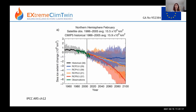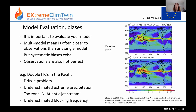A plot of Northern Hemisphere sea ice extent in February shows a decreasing trend, with the amount of decrease depending on the scenario, though with considerable uncertainty arising from model spread and variability.